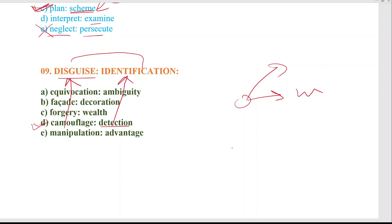So, if you have camouflage, we can detect it. If you have disguise, we can identify — identify it. And if you have camouflage, we can detect — answer D number. The other answers have very close meanings, but our answer is this one.